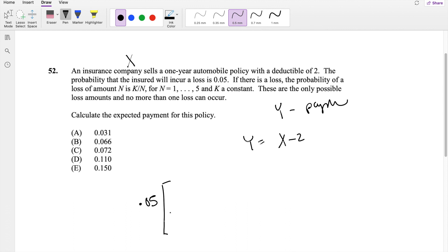If there's a loss, the probability of a loss amount of N, where N is defined as 1 through 5, and K, a constant, has this distribution right here, K over N.